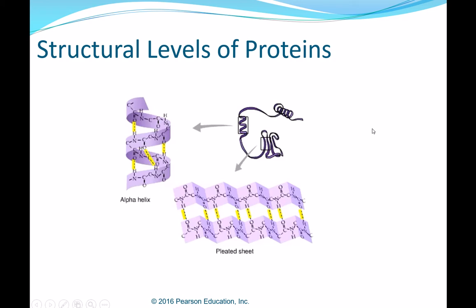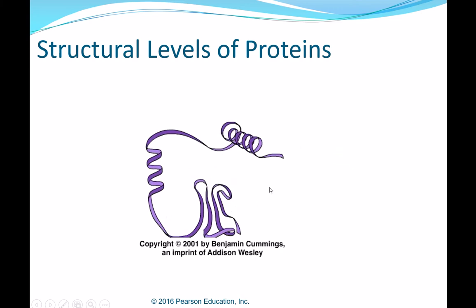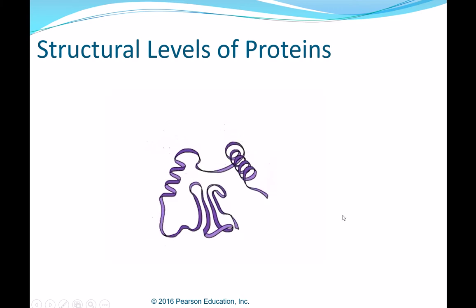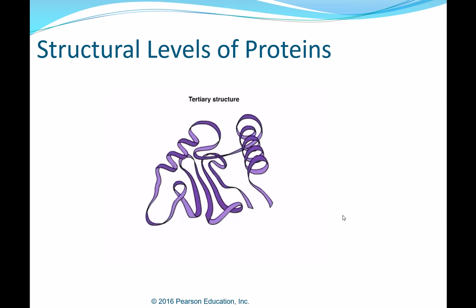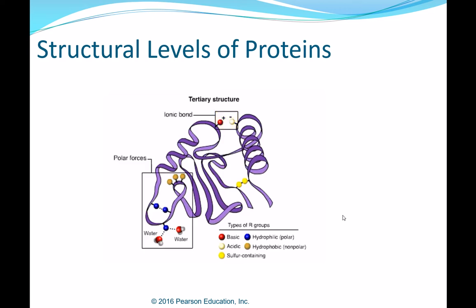Hydrogen bonds are intermolecular forces helping our proteins take shape. The next structural level is tertiary structure — irregular loops and folds that give the protein its overall three-dimensional shape. This results from interactions among R groups: acidic and basic R groups ionize and may form ionic bonds; hydrophilic R groups hydrogen bond with one another or with surrounding water; hydrophobic nonpolar R groups cluster inside the protein away from water. Tertiary structure may be further stabilized by covalent bonds between sulfur atoms in certain R groups.